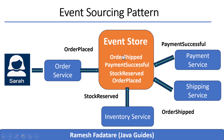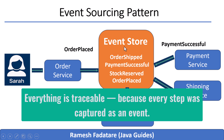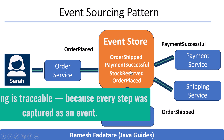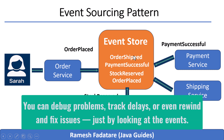Now let's say Sarah contacts support. She says she paid but never got her phone. Instead of guessing, your system shows the full story — not just the current status. You can see exactly what happened: when the order was placed, if stock was reserved, whether payment succeeded, and whether the package was shipped. Everything is traceable because every step was captured as an event. You can debug problems, track delays, or even rewind and fix issues just by looking at the events.